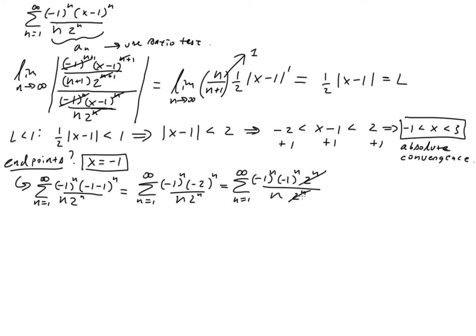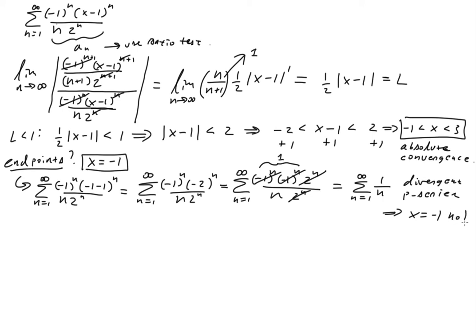The 2 to the n factors cancel, and the two alternating-sign factors of the same sign cancel and give positive 1. So what we have is the sum from n equals 1 to infinity of 1 over n, which is a divergent p-series. We conclude x equals negative 1 is not allowed — it's not in the domain of convergence.